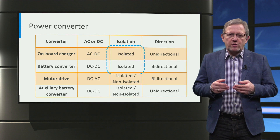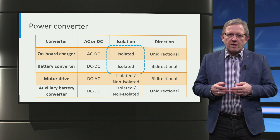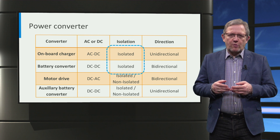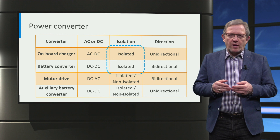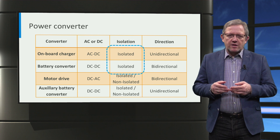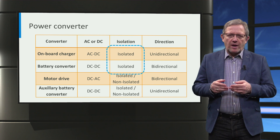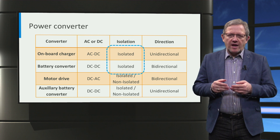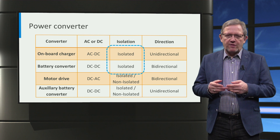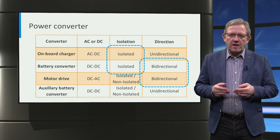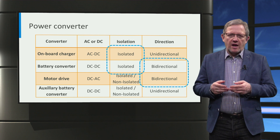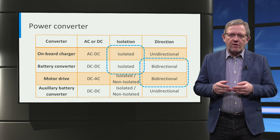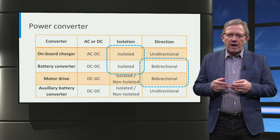It is important to note that one or both of the on-board charger and the battery converter has to be isolated so that there is isolation between the battery and the AC grid for safety reasons. Secondly, both the traction battery converter and the motor drive must be bidirectional.